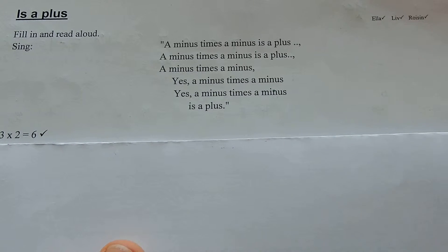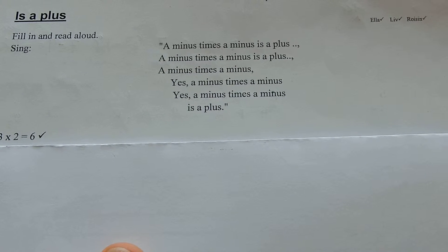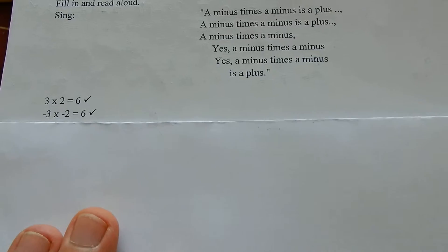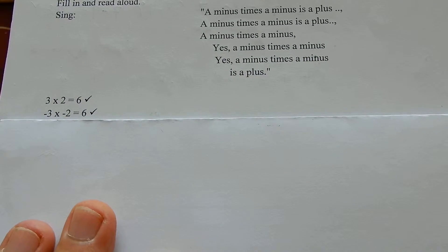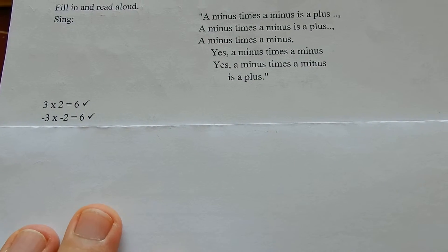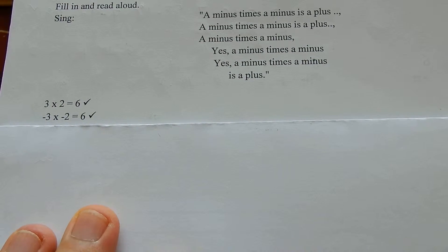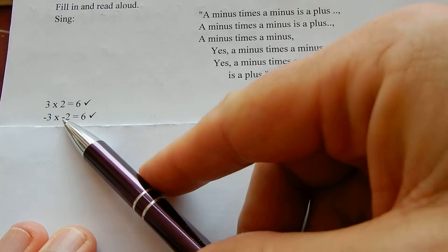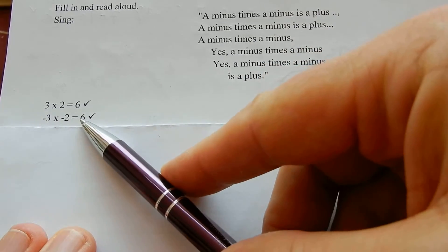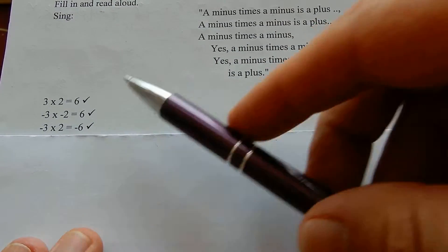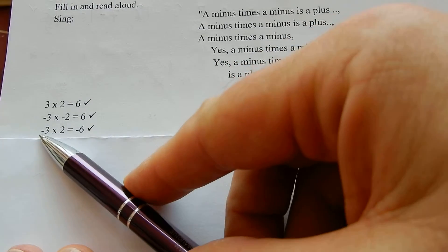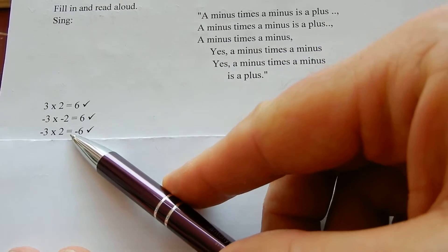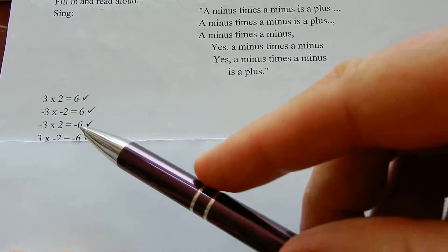3 times 2 equals 6. Minus 3 times minus 2 — because it's a minus times a minus, you get plus 6 again. If there's only one minus though, when you're multiplying, you get minus 6.